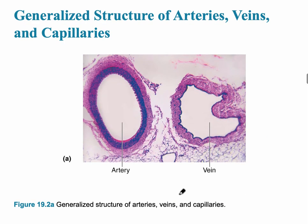This slide shows a micrograph of an artery versus a vein. On the left, the artery has a very large middle layer called the tunica media, which is the smooth muscle important for vasoconstriction and vasodilation. On the right, the vein has a very thin tunica media — only a couple of layers of smooth muscle.